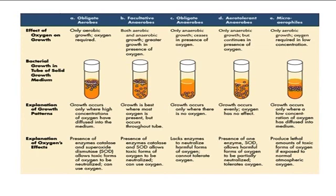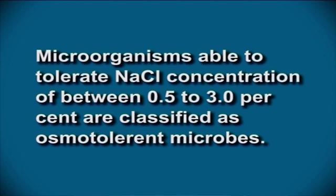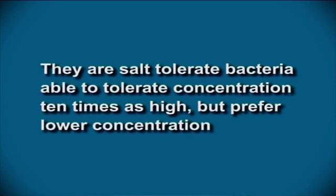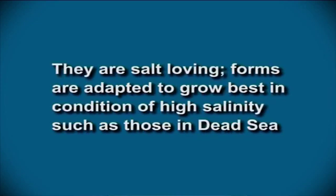Figure 9 shows the effect of oxygen on the growth of various types of microorganism. The effect of osmotic pressure on microorganisms: osmosis is the diffusion of water across a semipermeable membrane from a less concentrated to a more concentrated solution, and the pressure required to make this happen is called osmotic pressure. Microorganisms able to tolerate sodium chloride concentrations of between 0.5 to 3 percent are classified as osmo-tolerant microbes. Haloduric bacteria are salt-tolerant, able to tolerate concentrations 10 times as high but preferring lower concentrations. Halophiles are salt-loving organisms adapted to grow best in conditions of high salinity such as those in the Dead Sea.